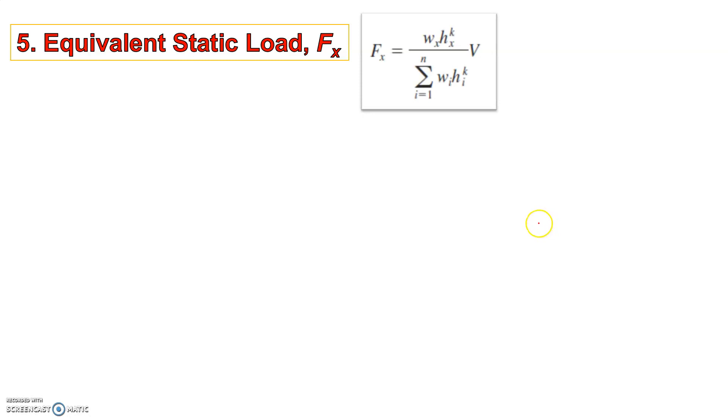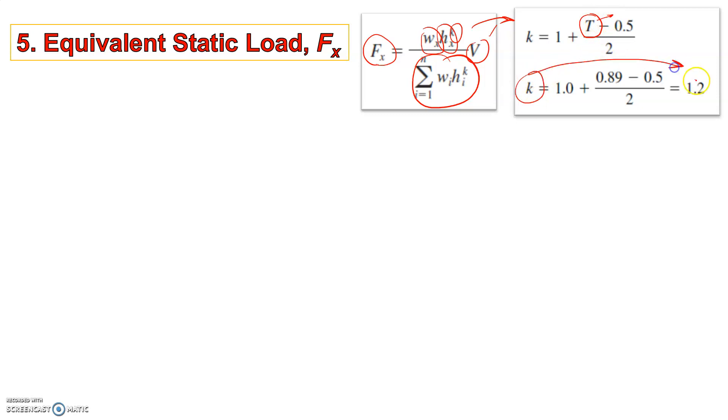Now this is a little involved process which involves the calculation of equivalent static loads on each floor. Now the equation that we use is Fx and we need to calculate certain quantities such as Wx, Hx, K. V is known to us. And this summation value of K is calculated using this equation. This is a function of time period of the structure which has been calculated earlier. So we get a value of K as 1.2.